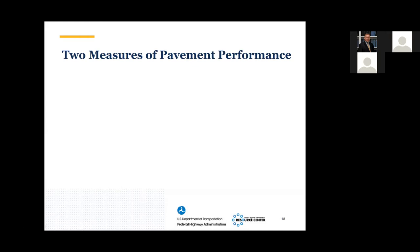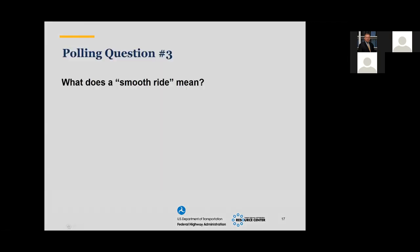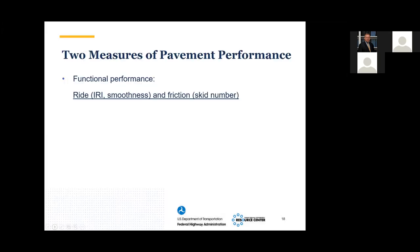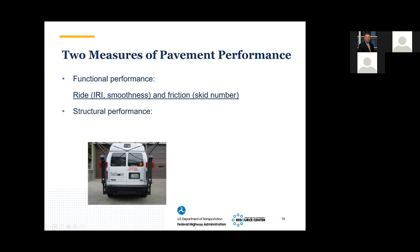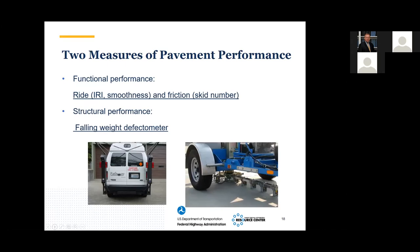Let's talk about two measures of pavement performance: functional performance and structural performance. A pavement may be extremely smooth today but if it's grossly deficient structurally it will not last very long. Functional performance includes the ride, smoothness, friction numbers, and skid numbers. Structural performance is measured with an FWD to measure deflection and understand the pavement below the top surface.